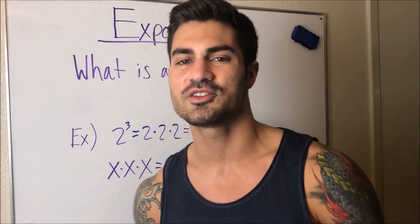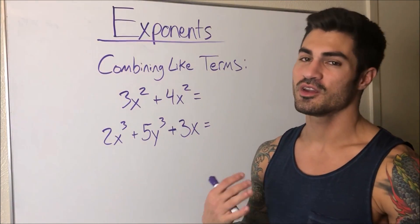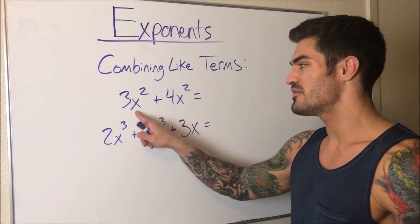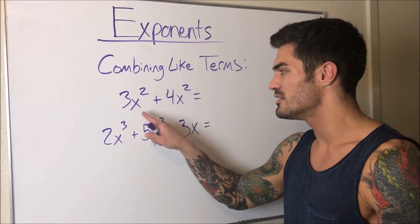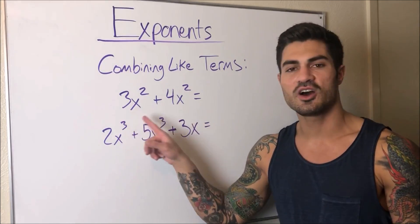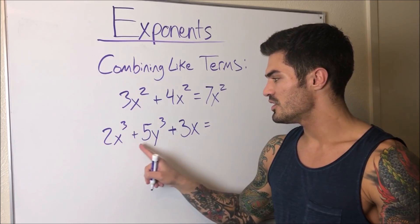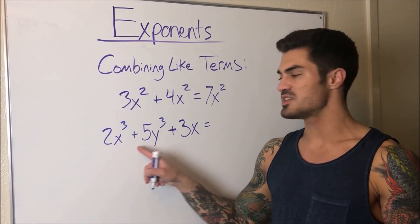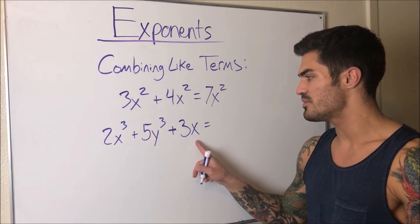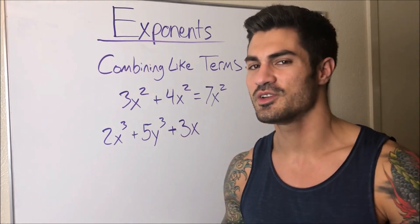Before we get into the exponent laws, here's something worth noting about combining like terms — adding and subtracting things with exponents. The only way we can add or subtract them is if they have the same base and the same power. So 3x² + 4x² simplifies to 7x². But 2x³ and 5y³ have the same power but not the same base, so we cannot combine them. And 3x² and 3x have the same base but not the same power, so those can't be combined either.